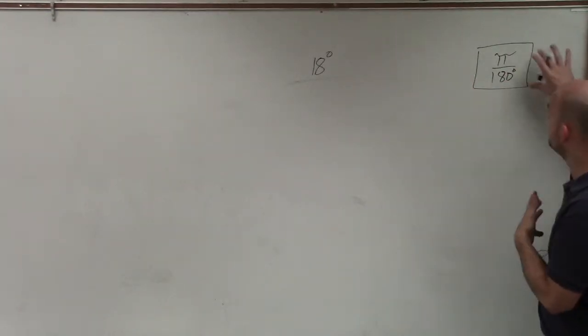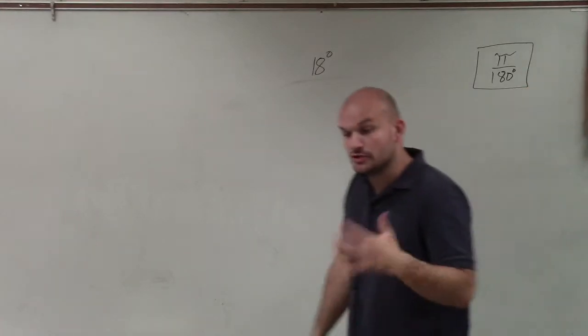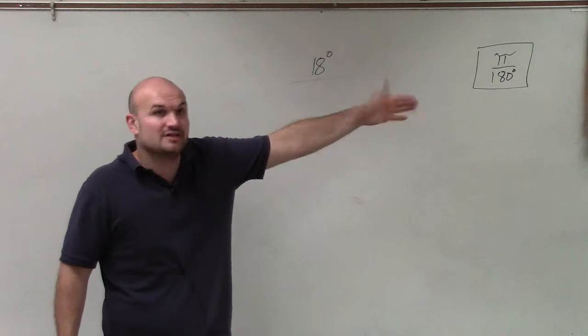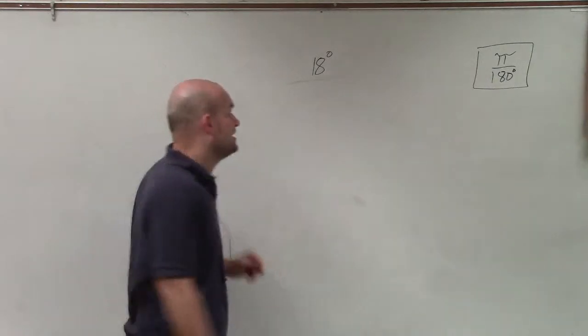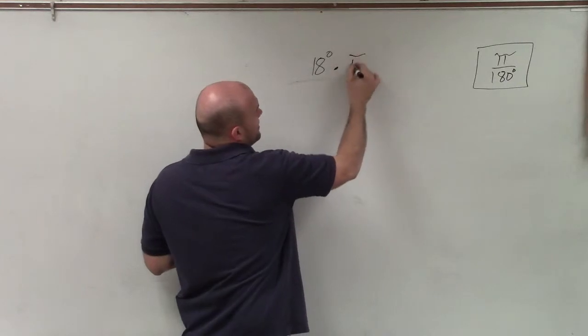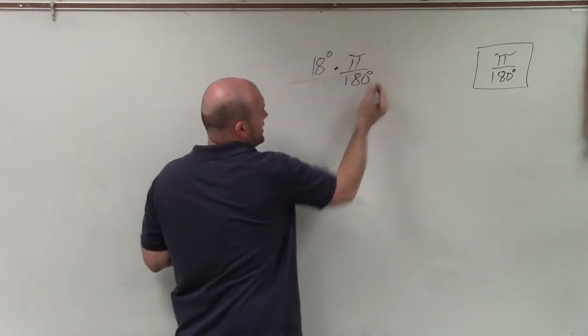So our conversion fraction that we have is pi over 180. To convert, all I need to do is multiply this by my fraction that is going to convert it over to radians. So I'll take 18 degrees and multiply it by pi over 180 degrees.